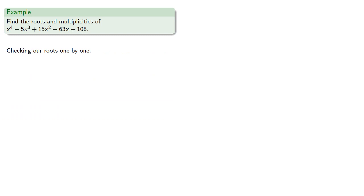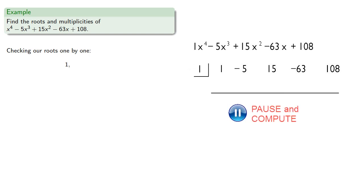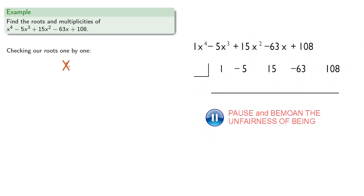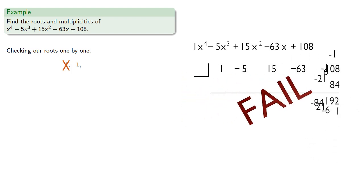So we'll check our roots one by one. We'll set up our synthetic division table. Don't forget to include that coefficient of 1. And we'll try x equals 1, dividing by x minus 1, and get a nonzero remainder, which means x equals 1 is not a root. We'll try negative 1, then 2, then negative 2, all getting nonzero remainders.